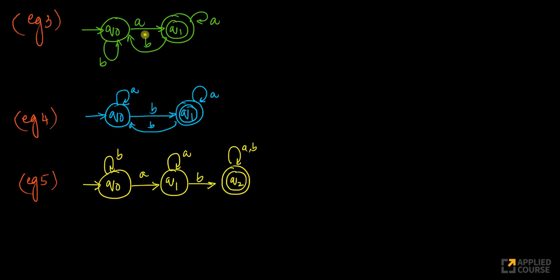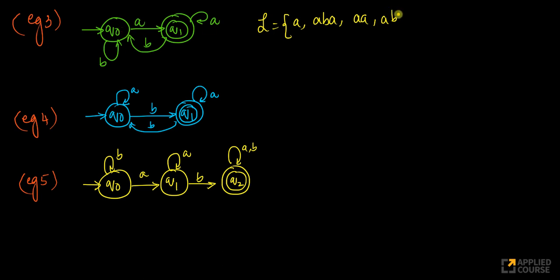Let's look at more examples. If I have just input 'a', it's accepted. If I keep having more a's, they will be accepted. The moment I get a b, I come here. If you think about what is accepted: 'a' is accepted, 'a, b, a' is also accepted, 'a, a' is accepted, 'a, b' is not accepted. So the language accepted by this is any number of symbols — Σ*a — meaning it has to end in 'a'.